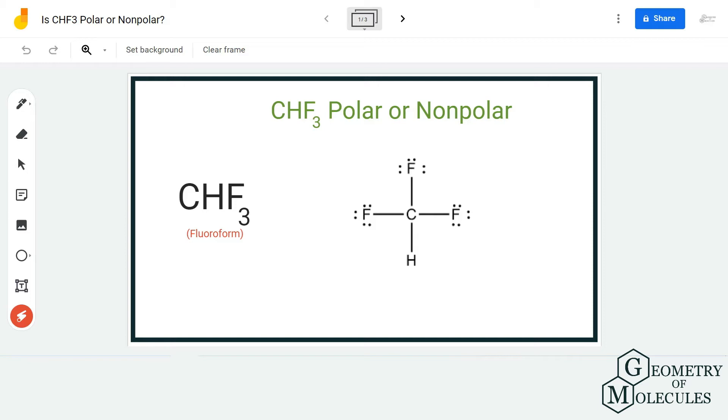Here is the Lewis structure of CHF3, in which the carbon atom is in the center, there are three fluorine atoms, and there is one hydrogen atom. Now to understand the polarity, we should also consider the electronegativities of the atoms that are involved in the structure.